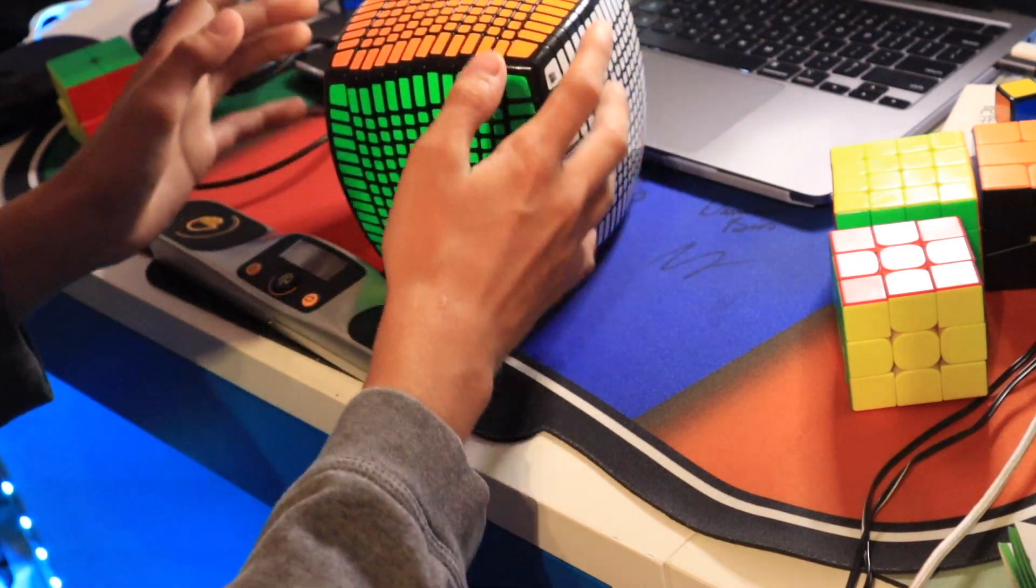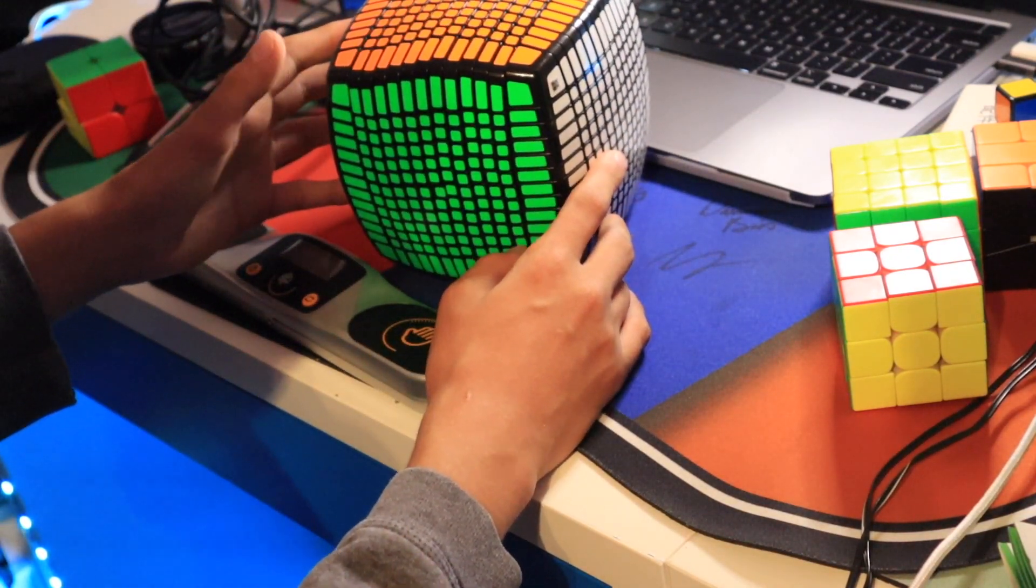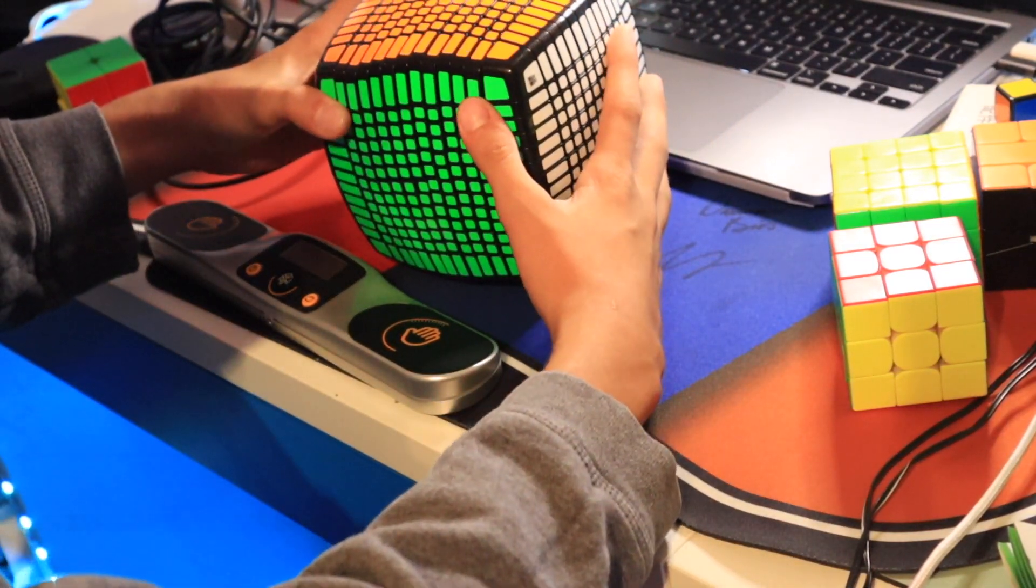Now, to see which cube is more difficult, I'm going to time a solve on both of these cubes, and see which one I get a worse time on. Let's start out by scrambling the 13x13.